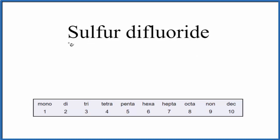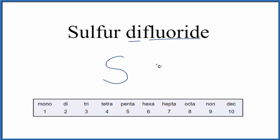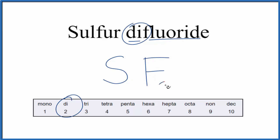First off, we have sulfur just by itself, so we write S. We have one sulfur, although we don't write the one. For fluoride, we have difluoride, so we write F, and di- means two — like a pair of dice. So SF₂. That's the formula for sulfur difluoride.